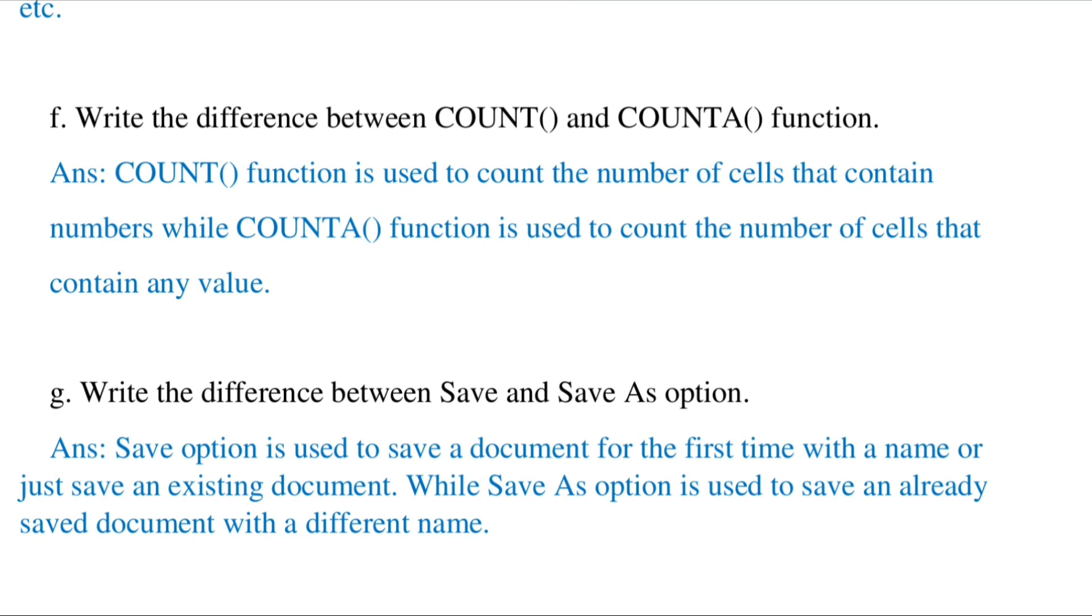Write the difference between Save and Save As option. Save option is used to save a document for the first time with a name or just to save an existing document. Save As option is used to save an already saved document with a different name.